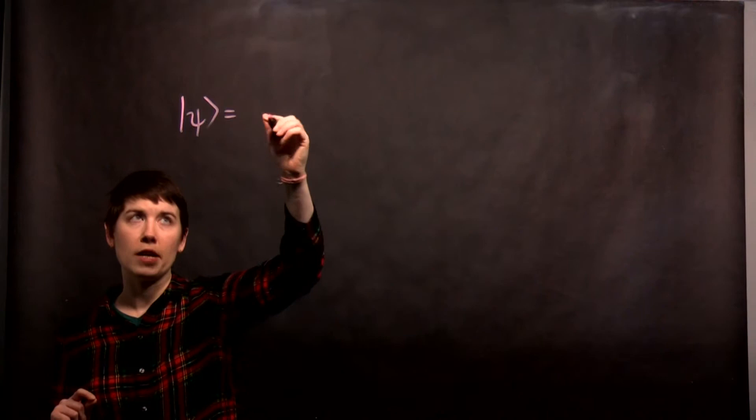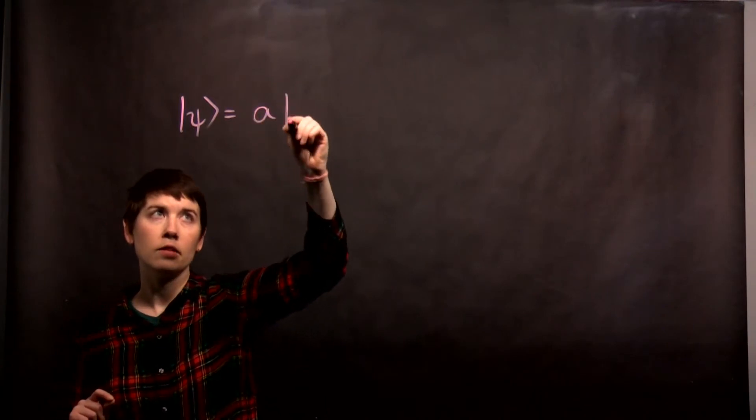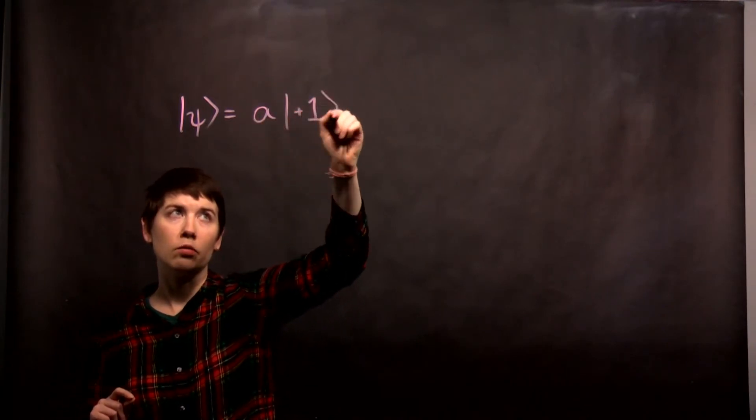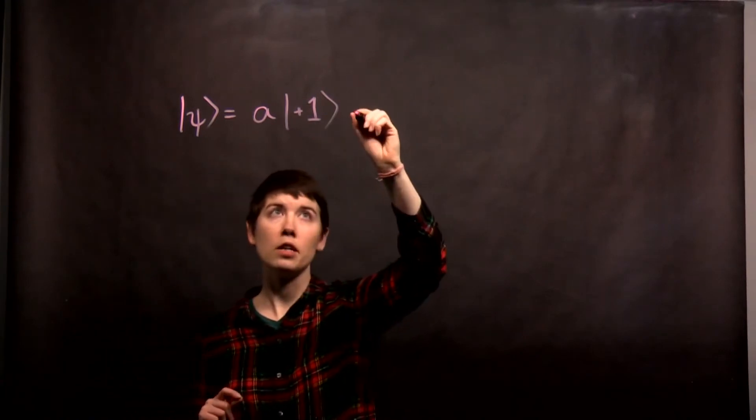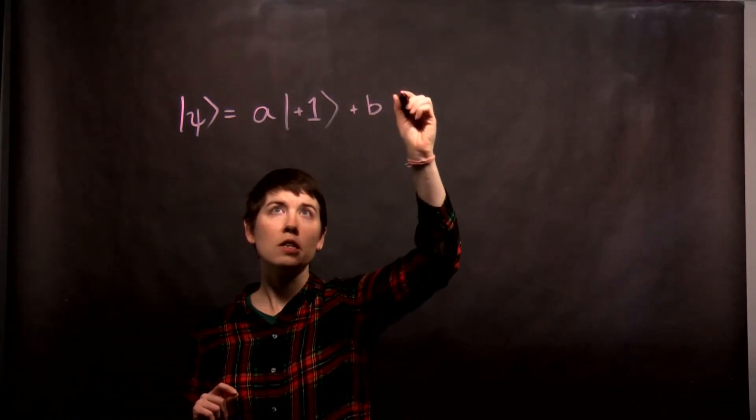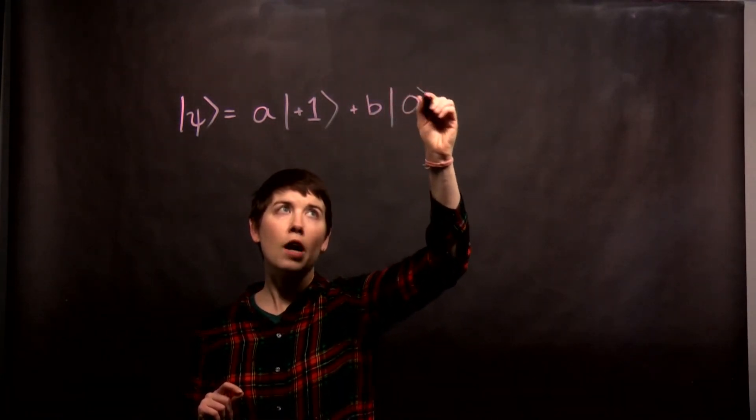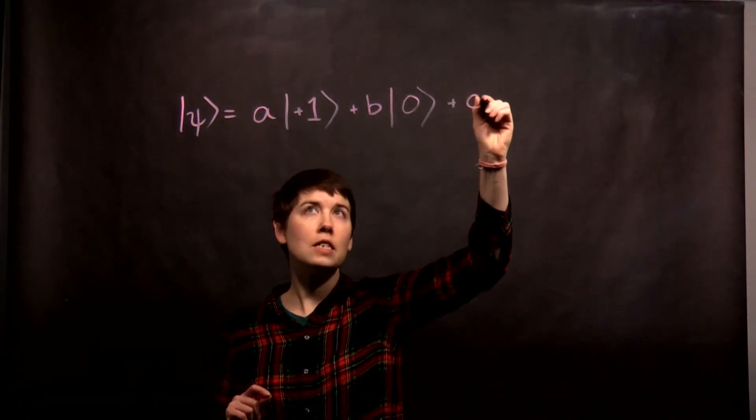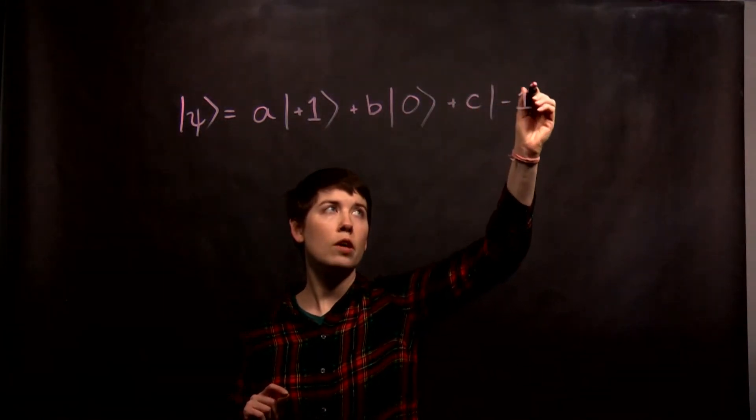So if I have a spin-1 state, I can imagine writing that as A, my spin-up eigenstate, plus B, 0 eigenstate, plus C, negative 1 eigenstate.